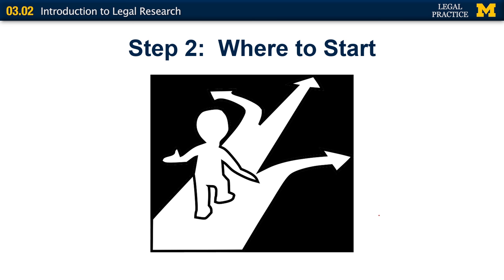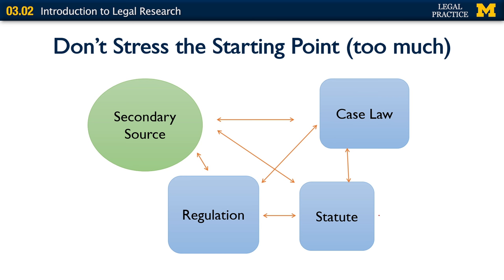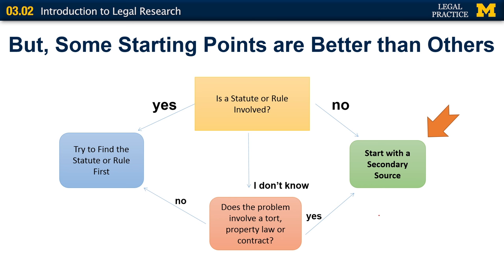Now that you've figured out where your various sources of law are collected, you have to figure out where to start with your research process. Each of these sources has cross-references to the others. For example, an encyclopedia article will very likely reference any relevant statutes, case law, and regulations. On the other hand, if you start with a statute, it will contain cross-references to case law, regulations, and secondary sources. Having said that, there are still some starting points that are better than others.